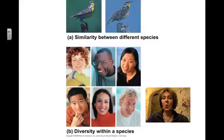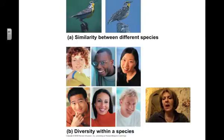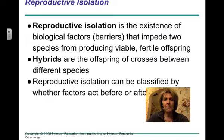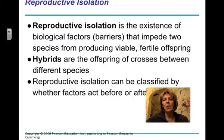We know that just looking morphologically at organisms, you can't necessarily tell if they're different species. Here we have two birds that are different species but look very similar, and then we have a lot of variation within the human species — within a single species, we see a lot of diversity. So because our definition of a species has so much to do with being able to reproduce and produce viable fertile offspring, we're going to talk about reproductive isolation.